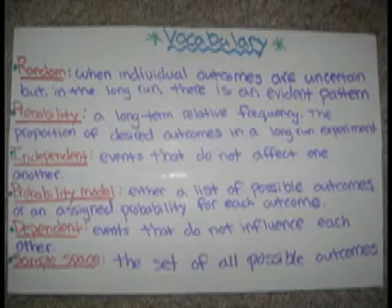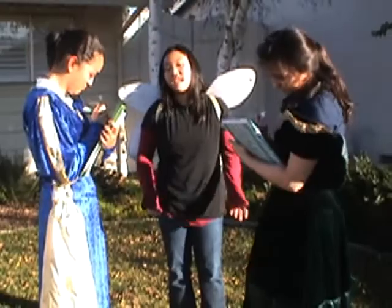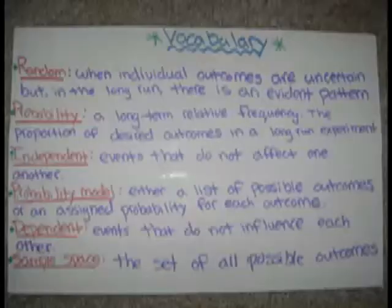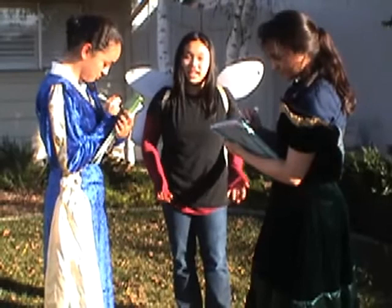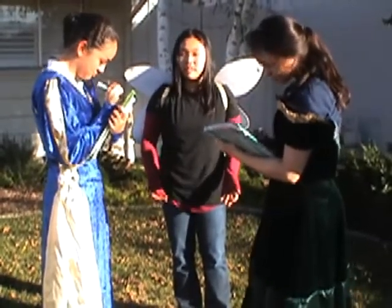Independent is when independent events do not affect one another. A probability model, which is another term, is either a list of possible outcomes or an assigned probability of each outcome. Dependent events are events that do not influence each other. And the last term is sample space, which is a set of all possible outcomes.